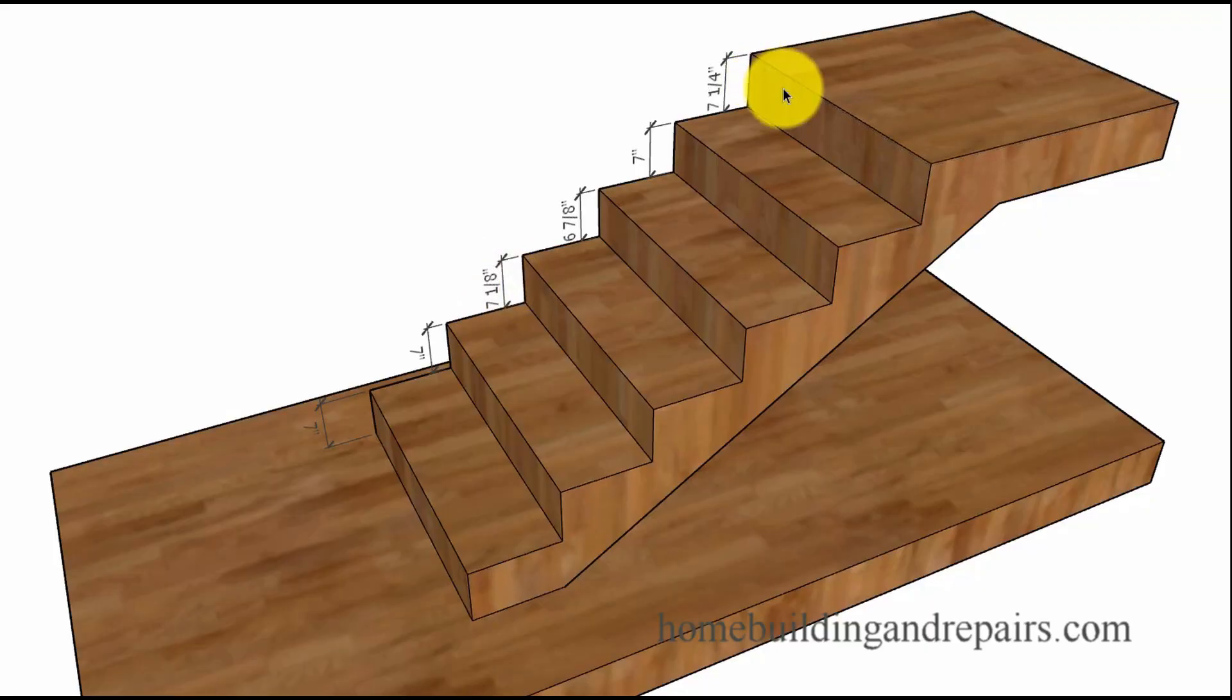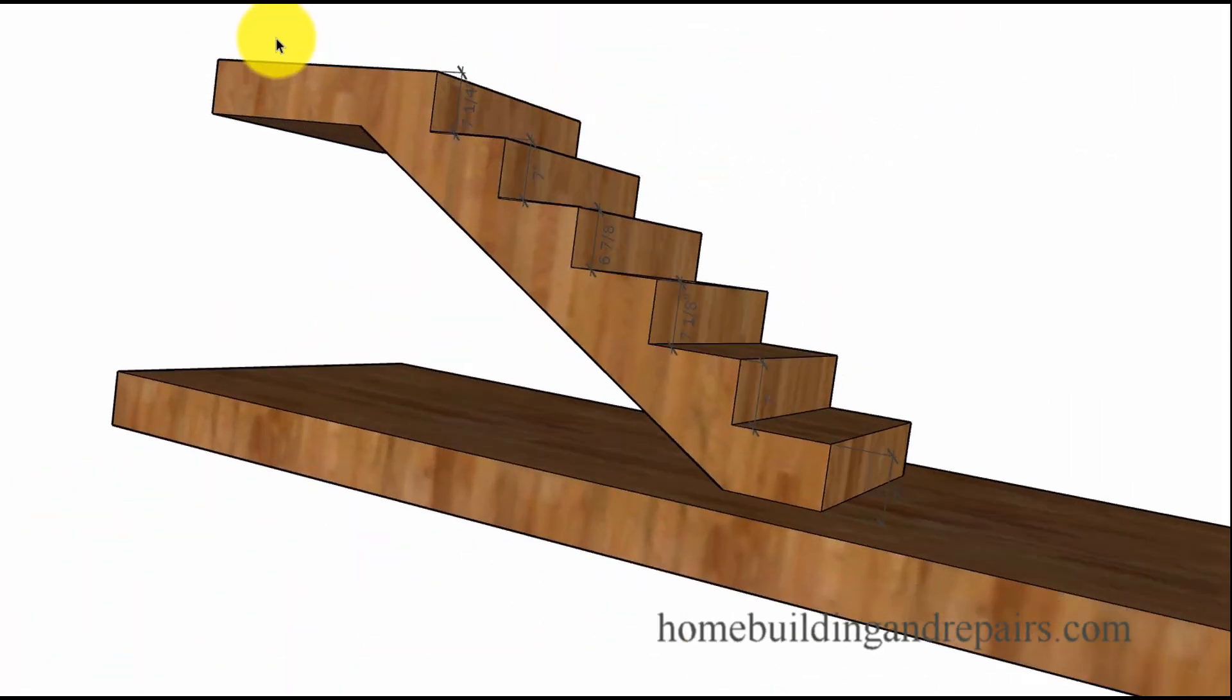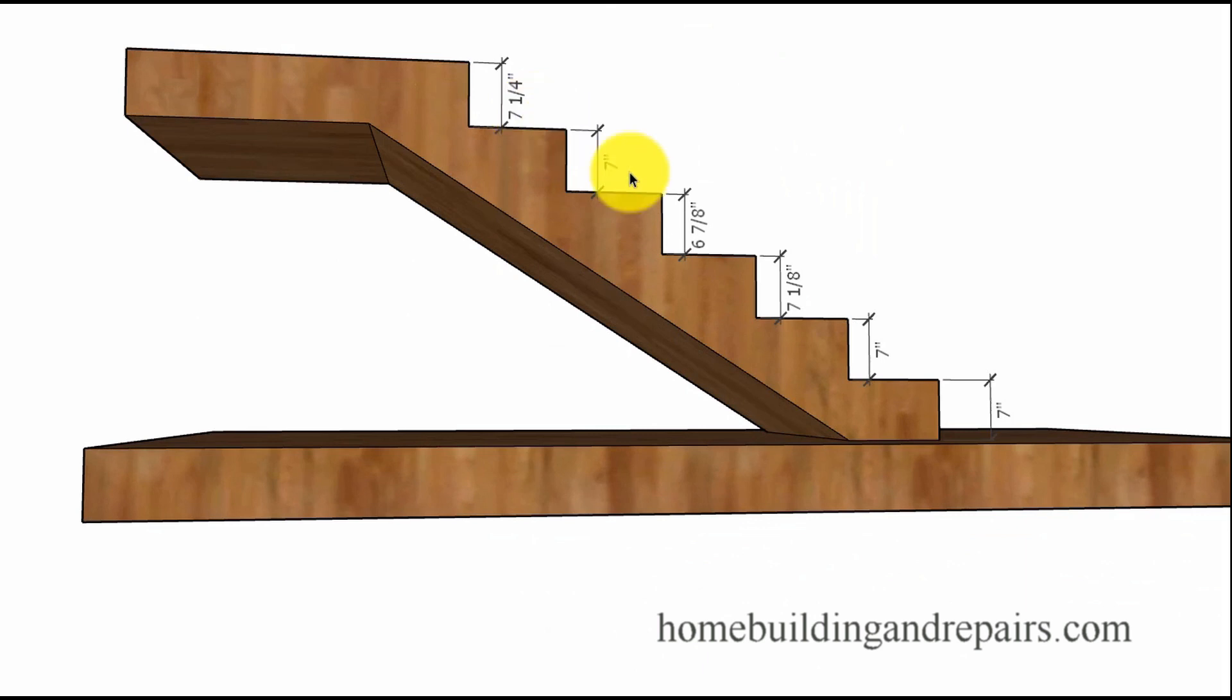Here's another situation that would also be acceptable. We now have a seven and a quarter inch riser at the top, making it the tallest one. The difference between six and seven-eighths and seven and a quarter is three-eighths of an inch, so we're still fine here.